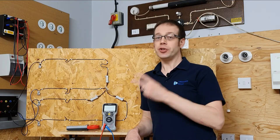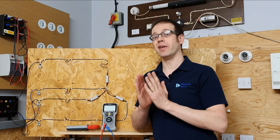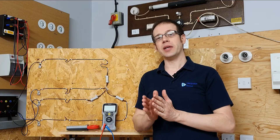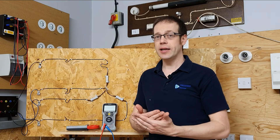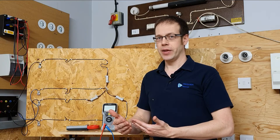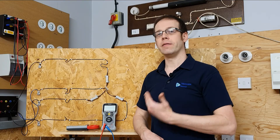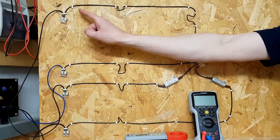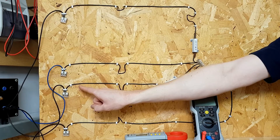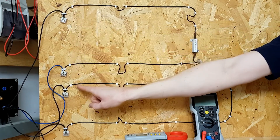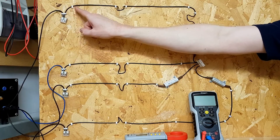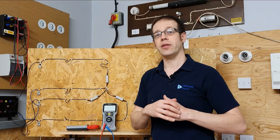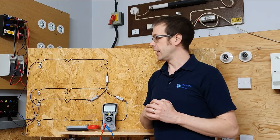In a three-phase system there are two kinds of voltage we're interested in: line voltage and phase voltage. These definitions work for both star and delta connected loads. The line voltage is the voltage that can be measured between any two supply lines — between L1 and L2, L1 and L3, or L2 and L3. Those are the three different ways we can measure line voltage in a three-phase system.